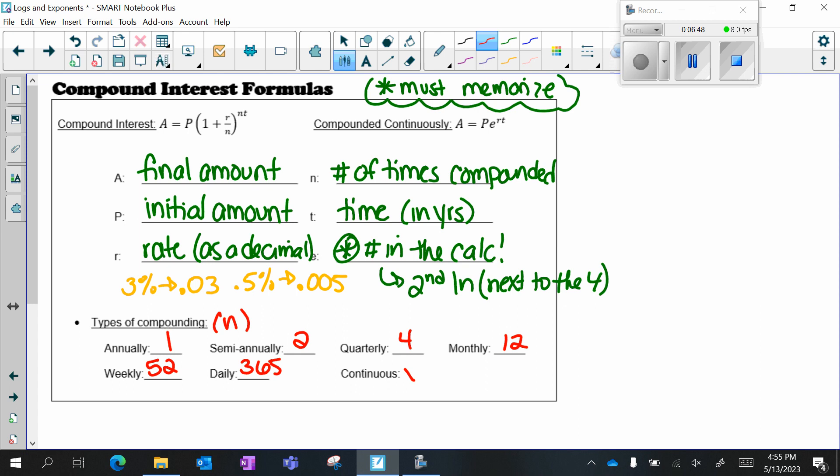And if the question says continuously, we use the equation PERT, A equals PE to the RT.